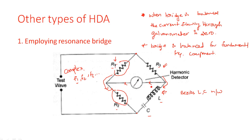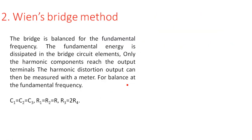When any other frequency component comes, the bridge is imbalanced — we are setting the balanced condition only for the fundamental frequency component. Whenever another component occurs, the bridge is simply imbalanced and the meter will deflect. That deflection gives the total harmonic distortion present due to components F2, F3, F4 and so on, other than the fundamental frequency component. The fundamental frequency is suppressed by balancing the bridge. A similar kind of method will be employed in the remaining cases also.